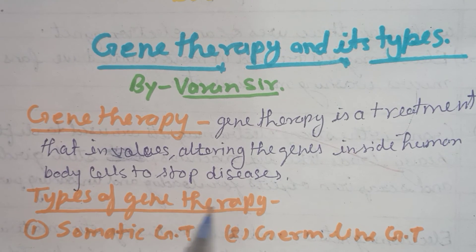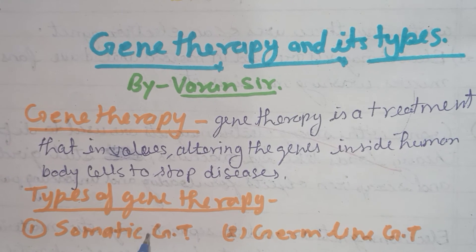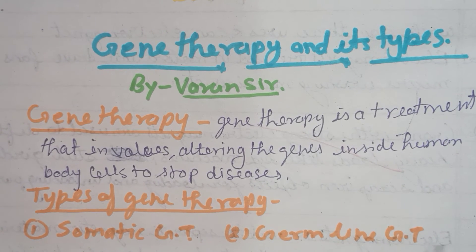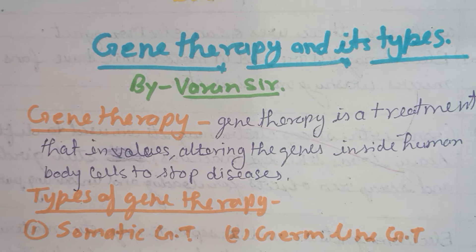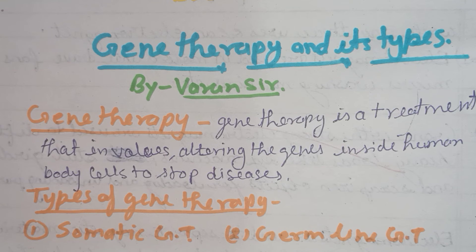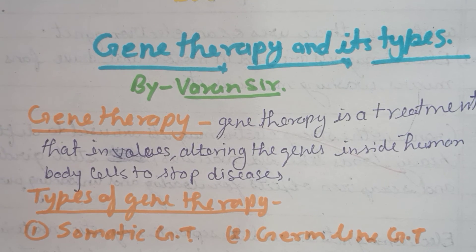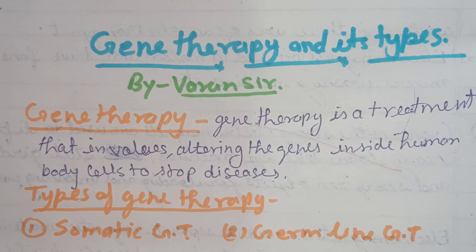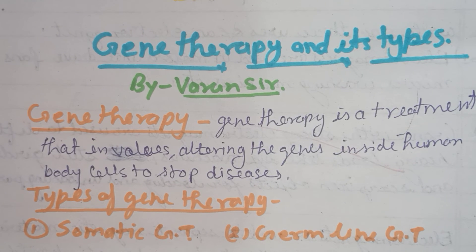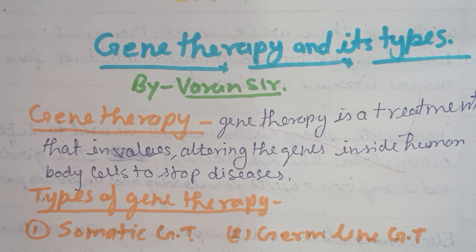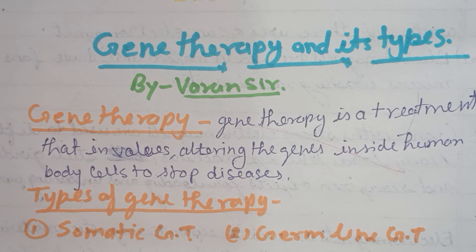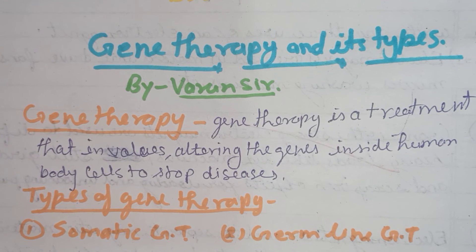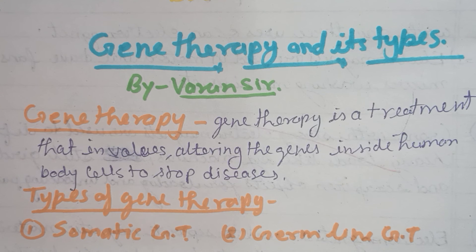Types of Gene Therapy: There are two types — Somatic Gene Therapy and Germ Line Gene Therapy. In Somatic Gene Therapy, the therapeutic genes are transferred into the somatic cells of a patient. This therapy will be restricted to the individual patient only and will not be inherited by the patient's offspring or later generations.